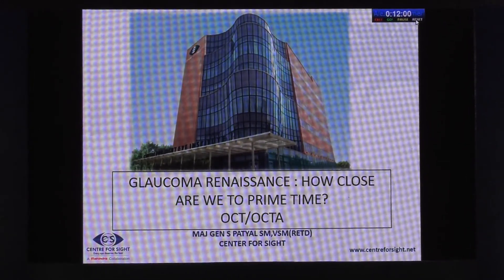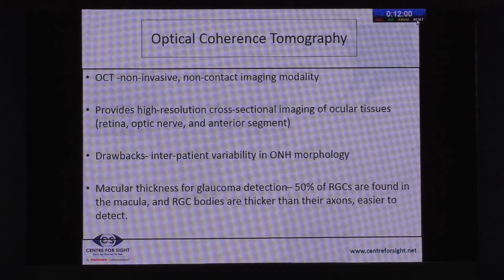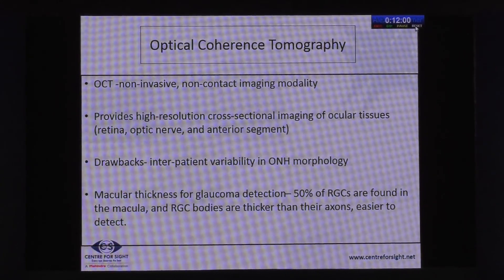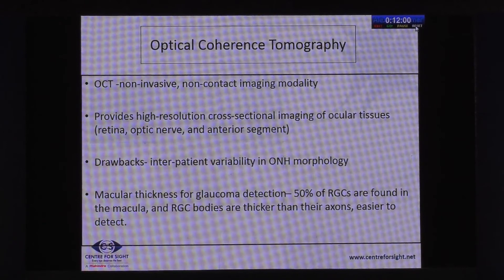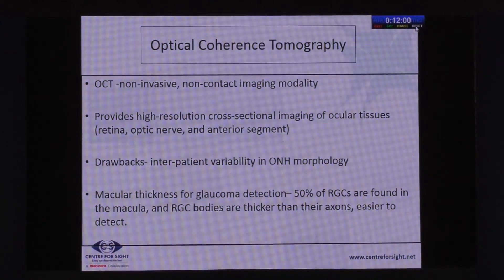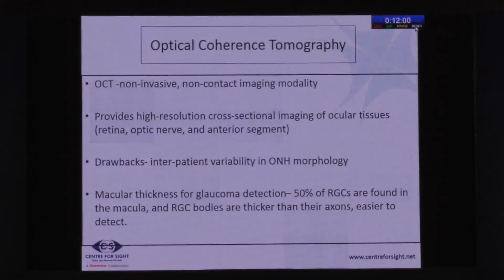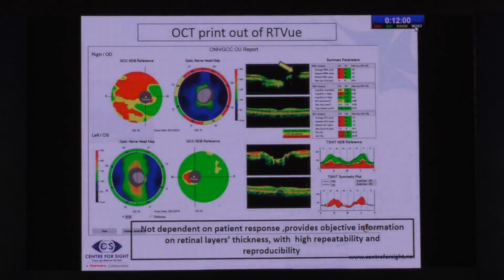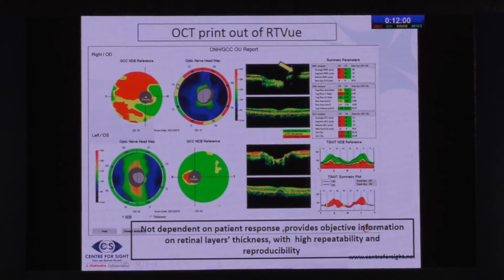The question is: how close are we to prime time? We all know that optical coherence tomography is a wonderful tool. We have used it on various machines — it's a non-invasive, non-contact imaging modality providing high-resolution cross-sectional images of various tissues. Drawbacks include inter-patient variability in optic nerve head morphology, and we also use macular thickness for glaucoma detection. If you look at a simple OCT printout from the RNFL, it gives you an immense amount of information, beginning from the GCC and the optic nerve head.